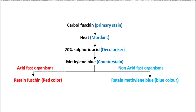After staining, if Mycobacterium tuberculosis is present, it appears as long, slender, straight or slightly curved bacilli with a beaded appearance in red color. You should not write 'I saw tuberculosis bacilli' or 'I saw leprosy bacilli' — it will be reported as acid fast bacilli only. Do not specify which bacilli.